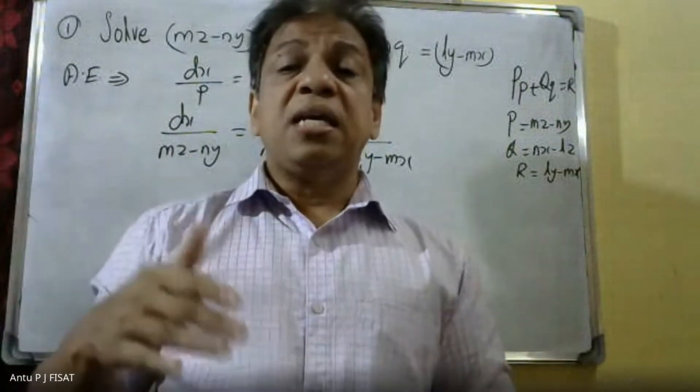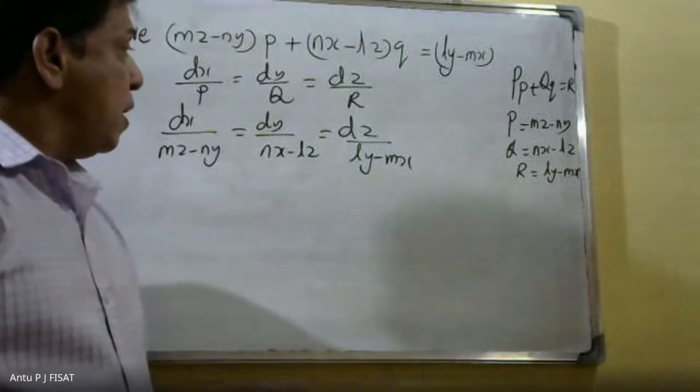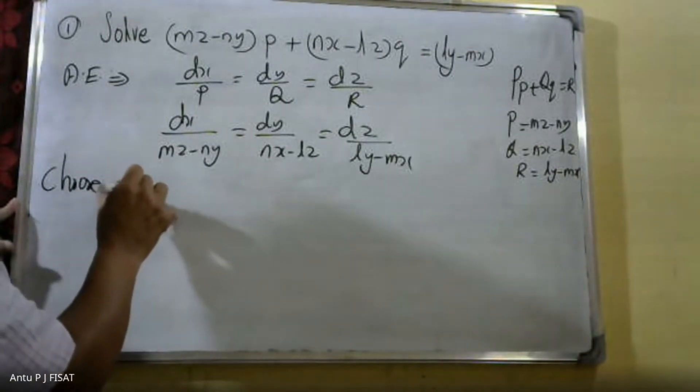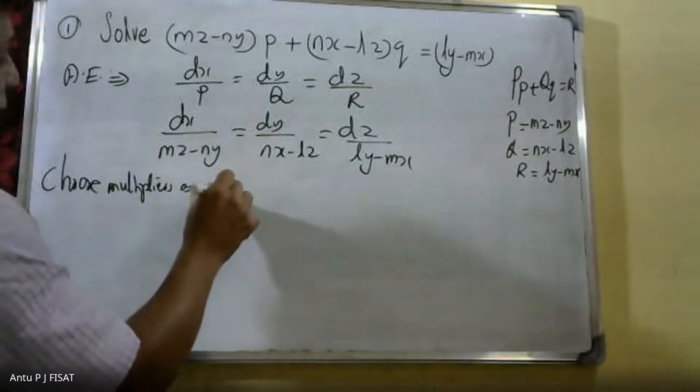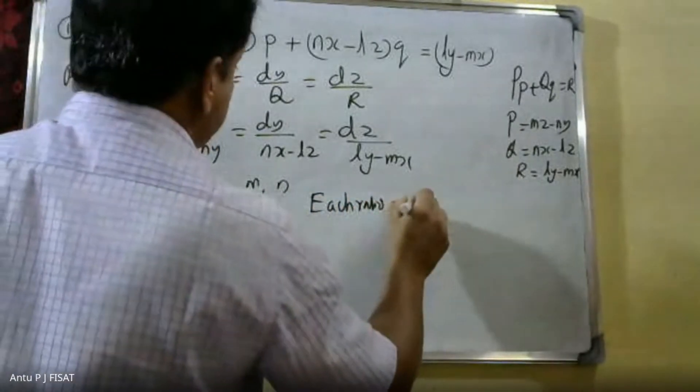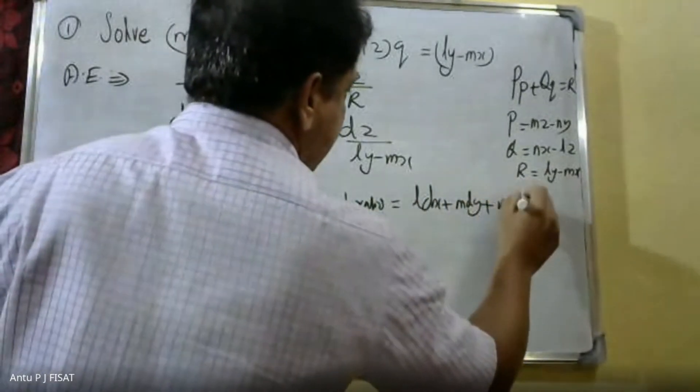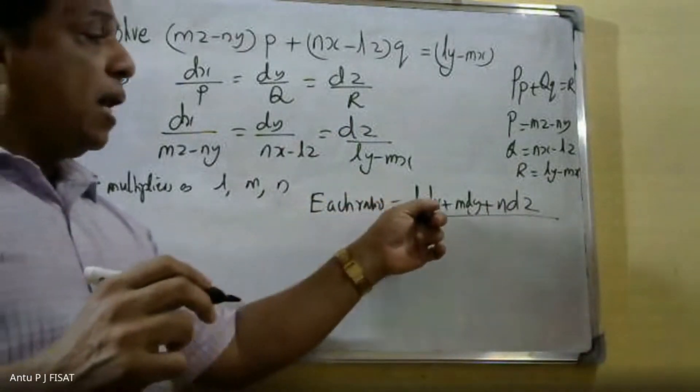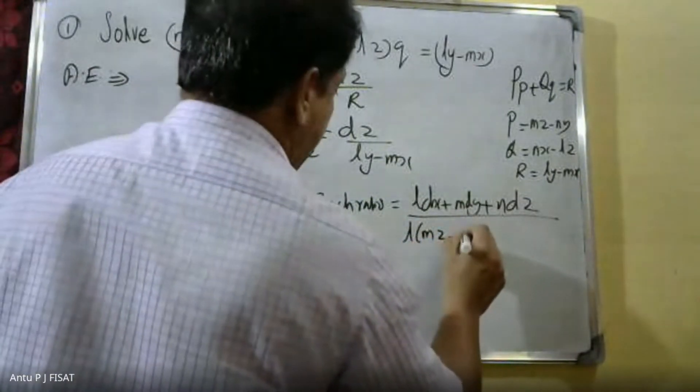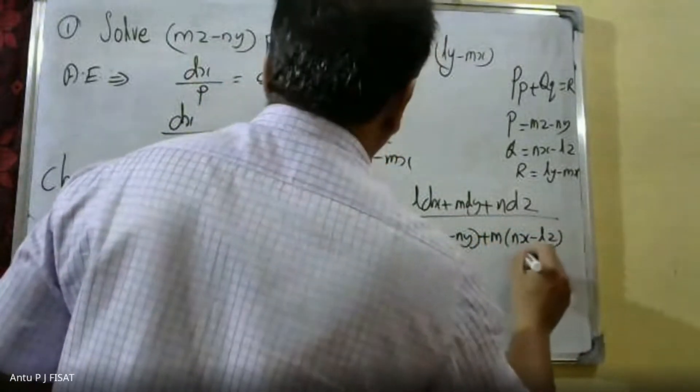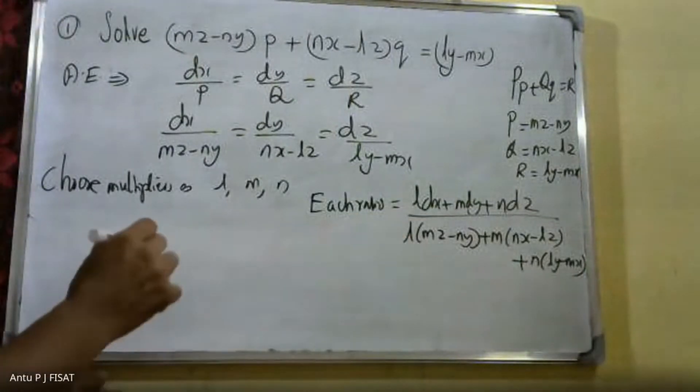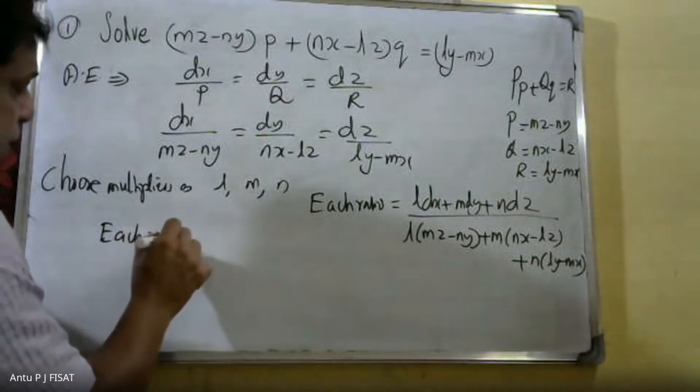We choose multipliers L, M, N. Each ratio is equal to (Ldx + Mdy + Ndz) divided by the corresponding denominator expression.